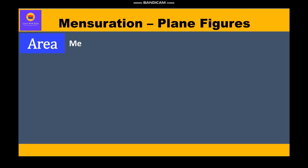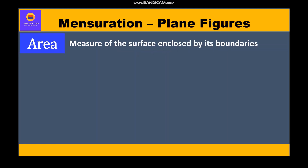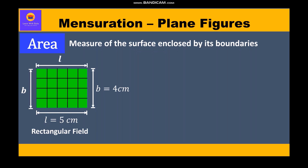Now we come to area. The area of a plane figure is the measure of the surface enclosed by its boundary. For example, in a rectangular field, the measure of the surface or region enclosed by its sides is called its area — that is, area equals length into breadth.